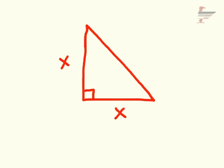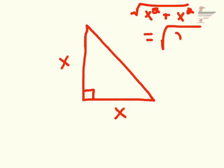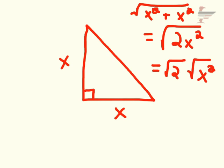The Pythagorean theorem says that the hypotenuse is going to be the square root of x squared, one of the sides squared, plus x squared again. This equals the square root of 2x squared, which we can separate further into the square root of 2 times the square root of x squared. The square root of x squared is just x, so we can write this as x times the square root of 2.